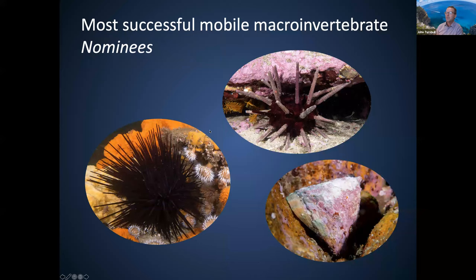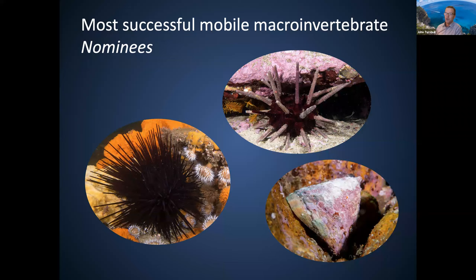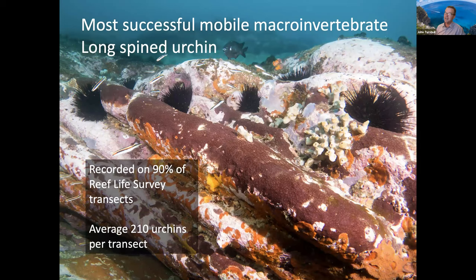Second prize goes to the most successful invertebrate — mobile macro invertebrates, so we're not counting corals and sponges. The three nominees are the long-spine urchin, the pencil urchin that looks like an underwater mine, and the tent shell. The winner is the black long-spine urchin — the one that likes to eat kelp and is expanding its range. It's recorded on 90% of our transects, and on average we record 210 urchins on each transect. That's 210 urchins for every 100 square metres — a lot of urchins.